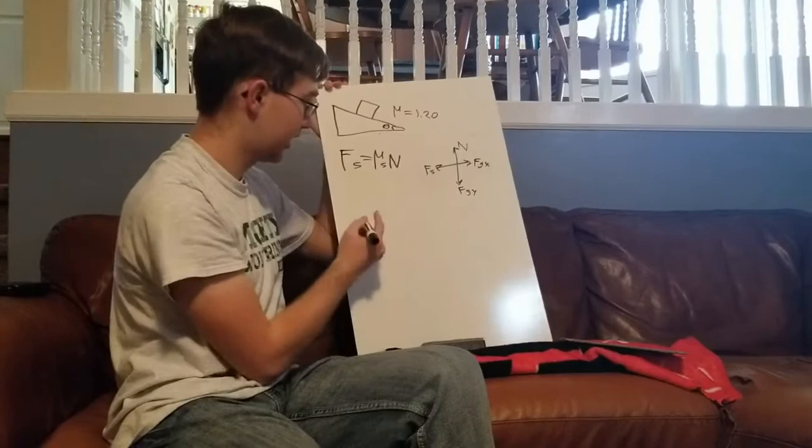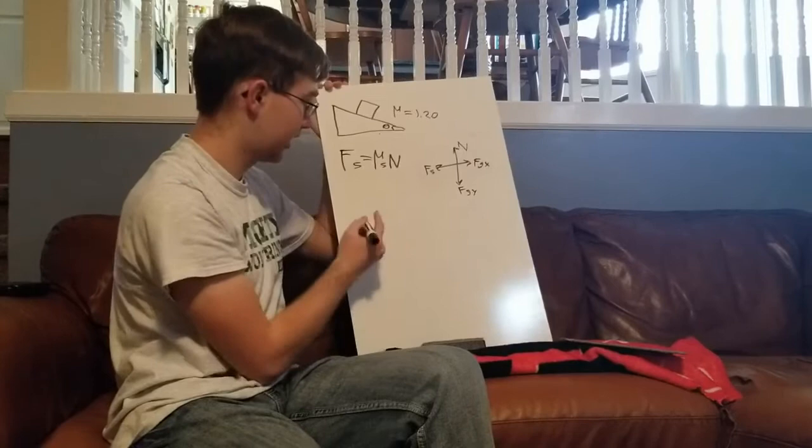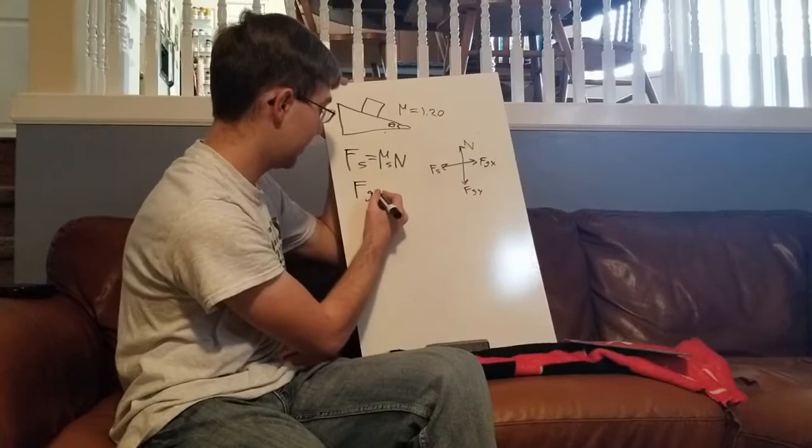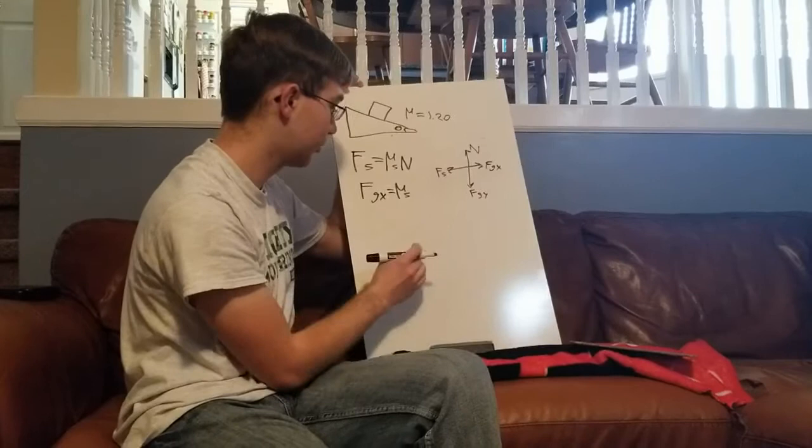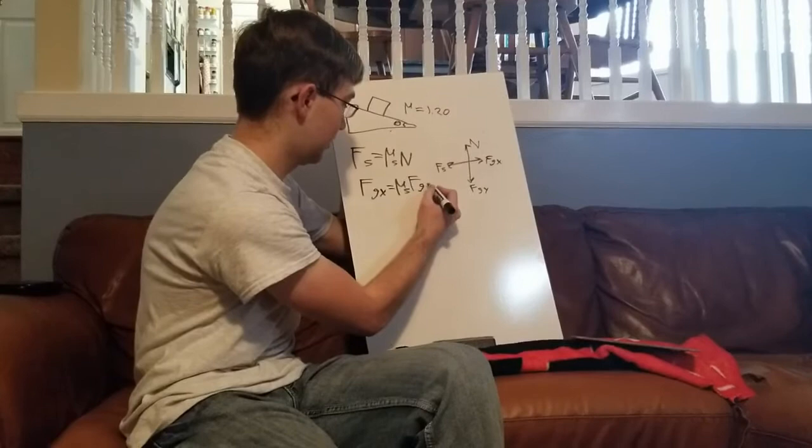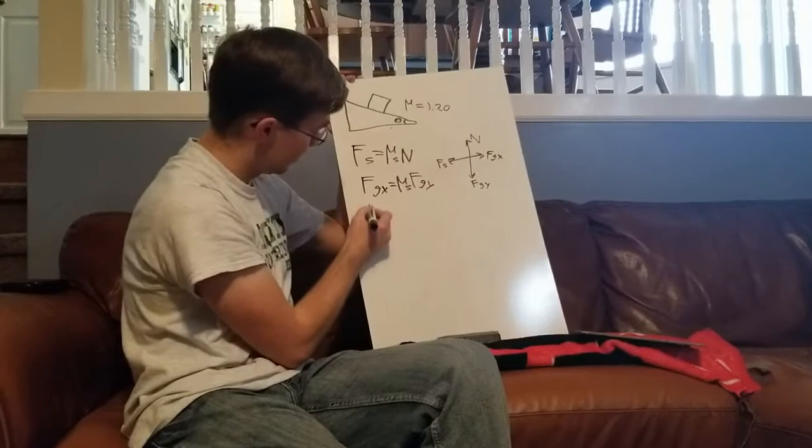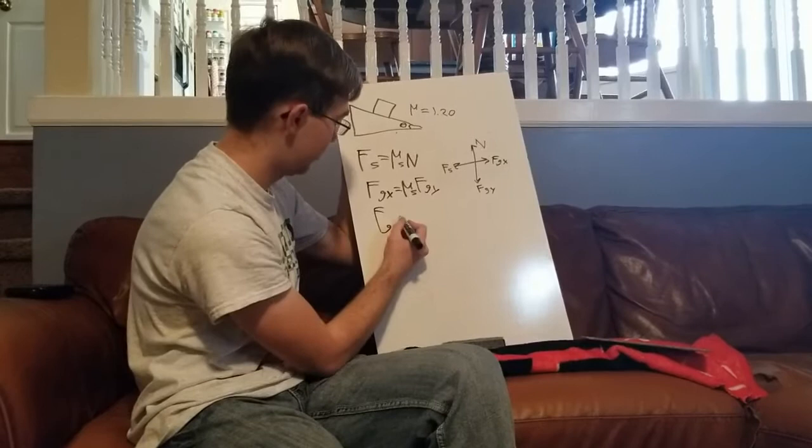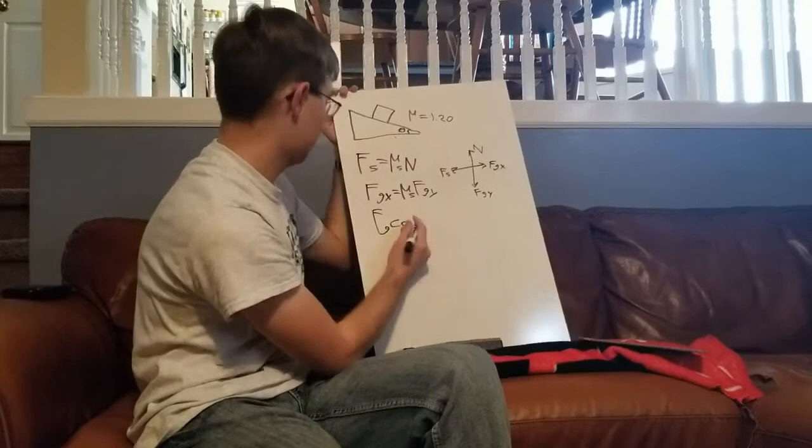So, I know that the force of static friction equals the force of gravity in the x direction and I know my constant of static friction and then I know n normal equals the force of gravity in the y direction. To find these forces of gravity I take the force of gravity and for the x direction I do the cosine I believe it's the cosine.